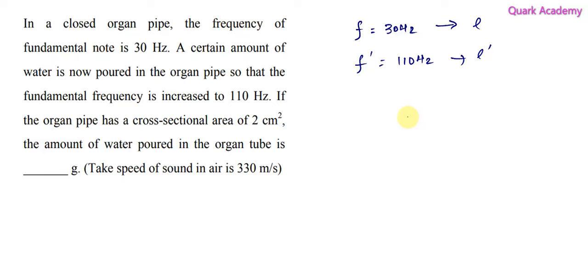First, we need to find how much length has changed. Using that, we can find volume of water. Since the cross-sectional area of the pipe is given, we can find volume of water. Using volume of water, we can find the mass of the water. So first, let's try to find the length L and L dash.